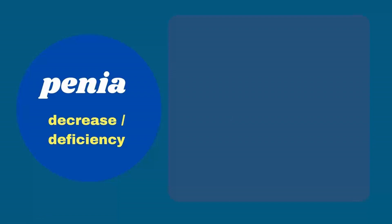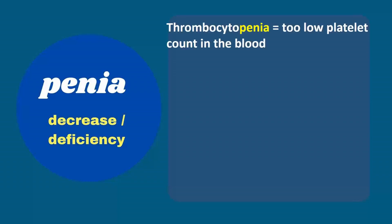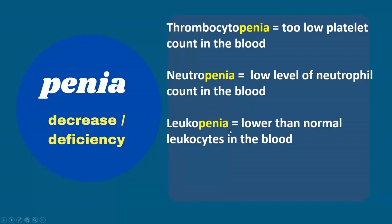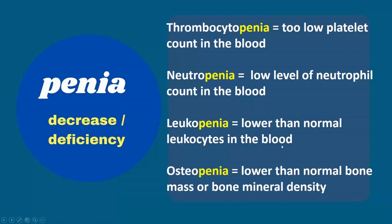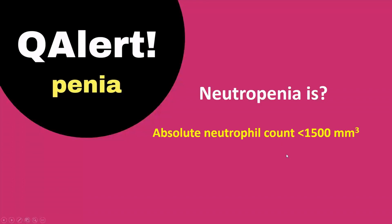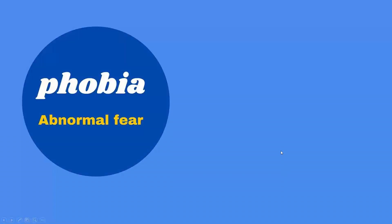Next, suffix penia refers to decrease or deficiency. Examples: thrombocytopenia is too-low platelet count in the blood, neutropenia is low neutrophil count in the blood, leukopenia is lower than normal leukocyte count, osteopenia is lower than normal bone mass or bone density. Question alert: neutropenia is defined as absolute neutrophil count less than 1500 per cubic millimeter.